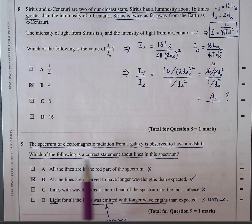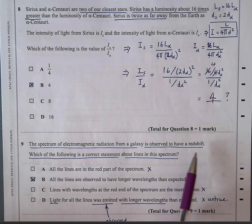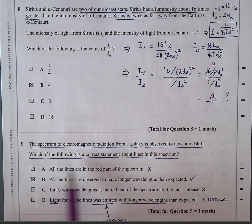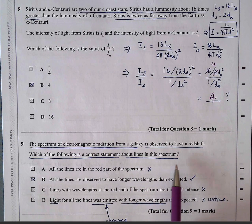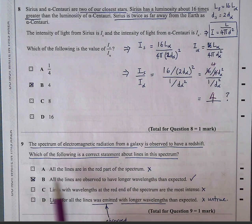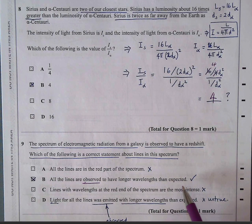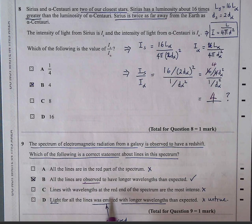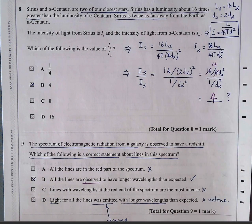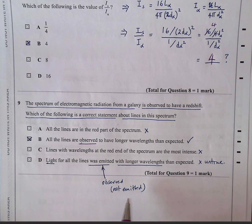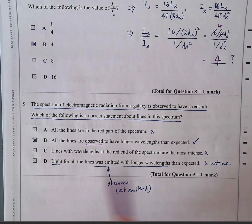Question 9. The spectrum of electromagnetic radiation from a galaxy is observed to have a redshift. Which of the following is a correct statement about lines in this spectrum? All the lines are in the red part. That's incorrect. All the lines are observed to have, and that's the key word, observed to have longer wavelength than expected. Yes, that is true for redshift. Lines with wavelengths at the red end of the spectrum are the most intense. No, that's not relevant. Light from all lines was emitted with longer wavelengths. No, they're emitted with a normal wavelength. But then they're observed by the observer, not emitted, to be longer than they are emitted. So the answer is B.